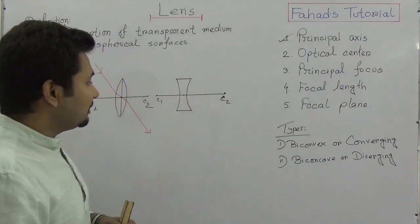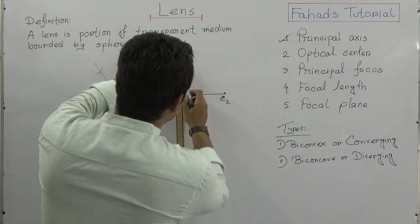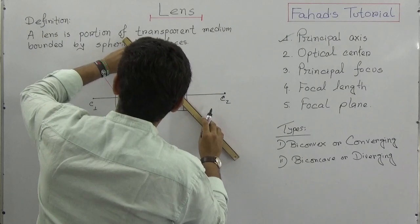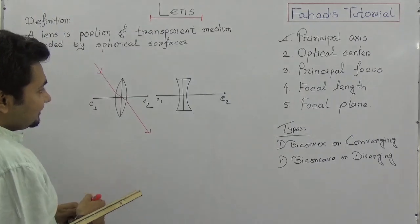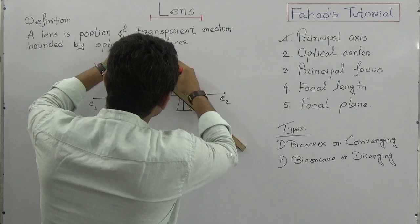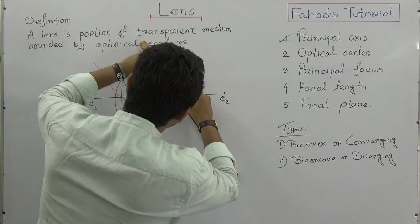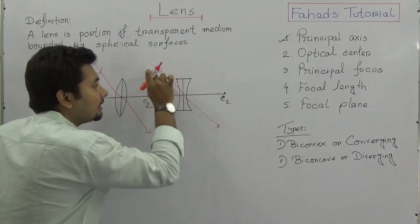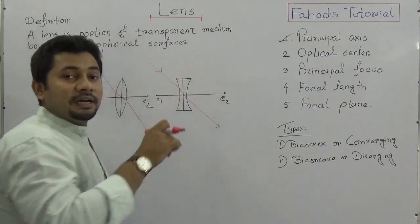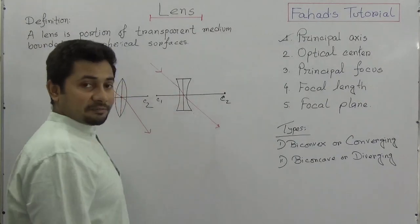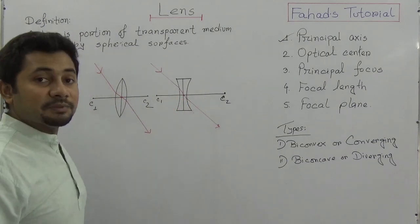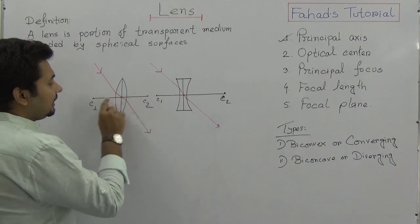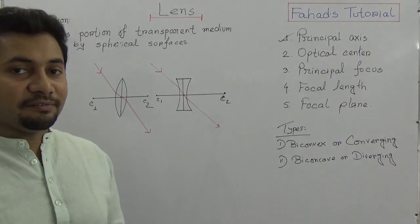Similarly here also: if I draw the perpendicular based on the principal axis we will have the optical center. Suppose a line is coming from this way, and there will be a little change during this, and this would be the emergent ray. Because light was coming through air and entering into glass, some refractions will take place. The incident ray and the emergent ray are parallel at this point — this is the optical center. And the joining lines between the centers of curvature form the principal axis.